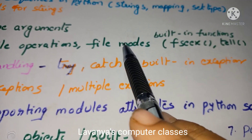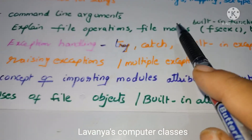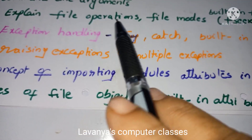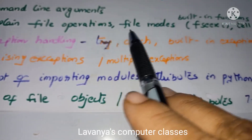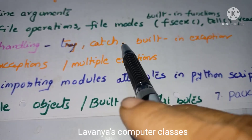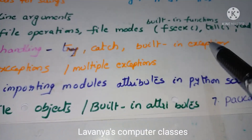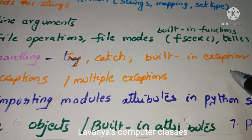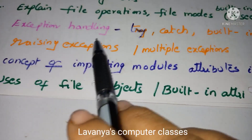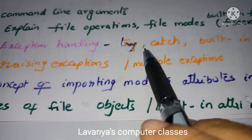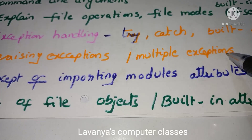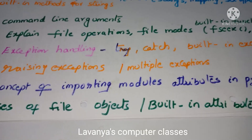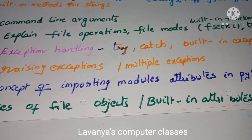The next concept is exception handling — read the entire exception handling concept. What is exception handling? What are the reserved words used in exception handling? What are the different types of exceptions? What are built-in exceptions? How to use different exceptions? Then read about raising exceptions — how to raise an exception — and go through multiple exceptions. Exception handling is fully covered this way.